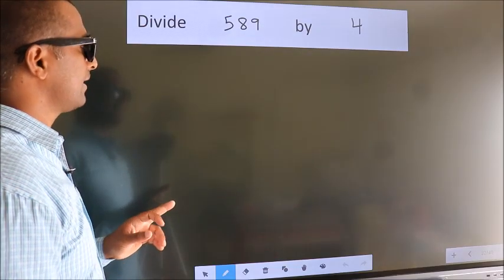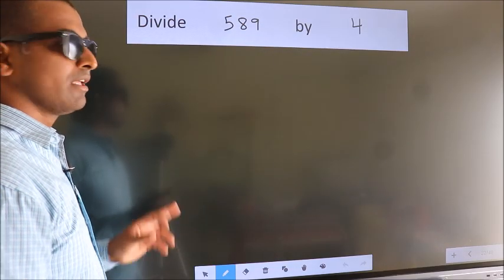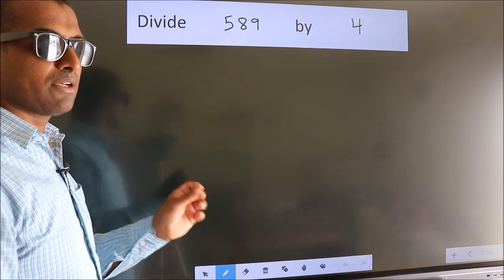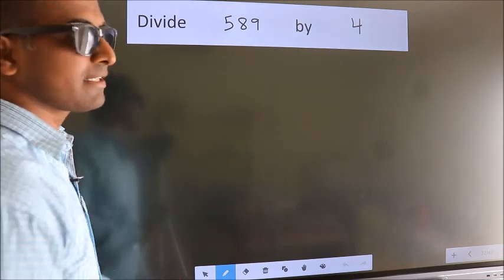Divide 589 by 4. To do this division, we should frame it in this way.